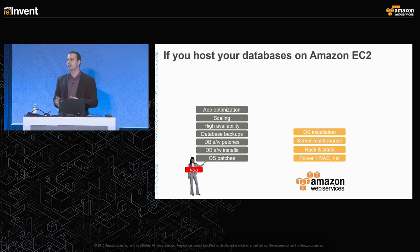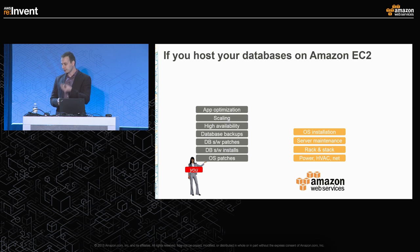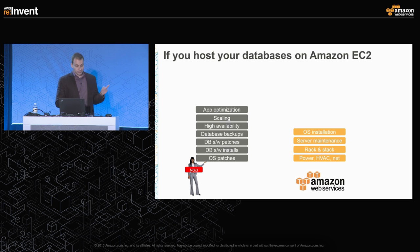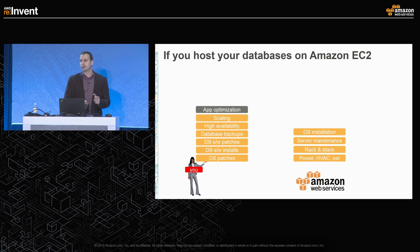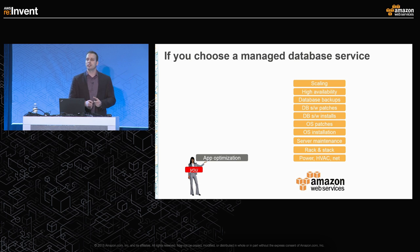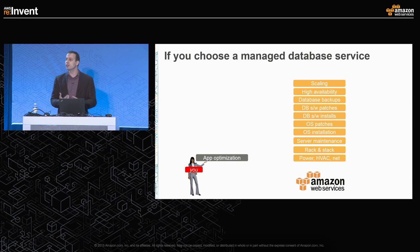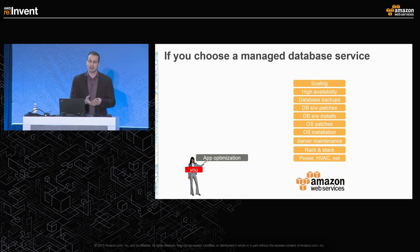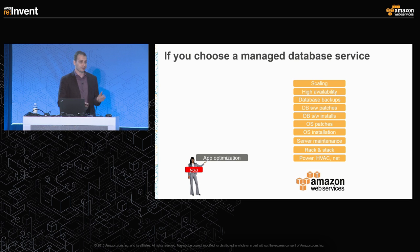If you move from on-premise to AWS and run self-managed on EC2, we offload some of those tasks — you no longer need to buy servers or install the operating system — but there is still a lot to be done on your end. This is where the value of managed services comes in. If you switch to a managed database service, we offload all of those tasks so you can focus on what matters most: your application. Speed to market matters, and the time your developers spend matters, so you want all of that invested in what differentiates your business.